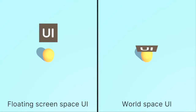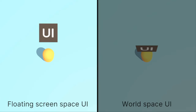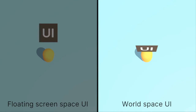Next: is the UI facing the camera? FloatingScreenSpaceUI will automatically face the camera at all times — it appears exactly like before. WorldSpaceUI, on the other hand, has a position and orientation in 3D space, and will appear warped when viewed from different angles.